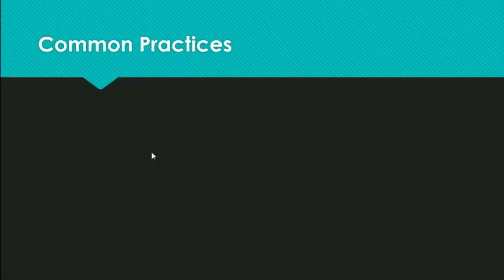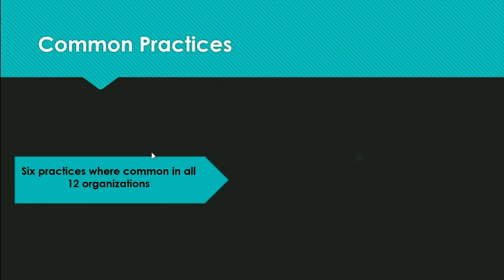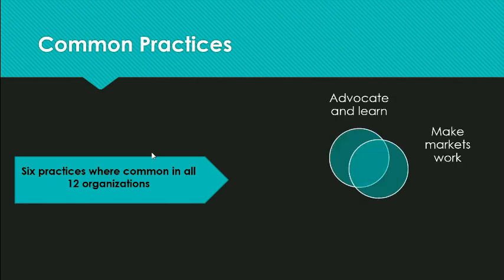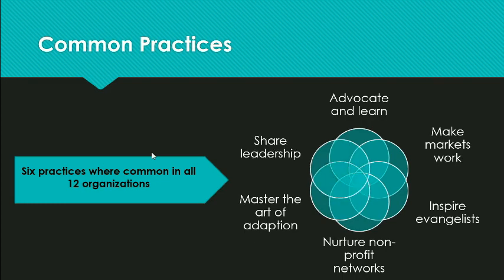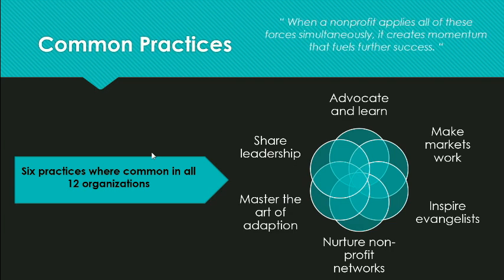The practices that are common across all of the 12 organizations identified by Crutchfield and Grant are that they advocate and serve, make markets work, inspire evangelists, nurture nonprofit networks, master the art of adaptation, and share leadership. The authors also state that when a nonprofit applies all of these forces simultaneously, it creates the momentum that fuels further success.